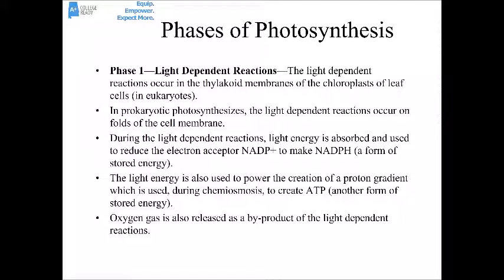Photosynthesis occurs in two main stages or phases. Phase 1 is called the light-dependent reactions. They occur in the thylakoid membranes of the chloroplast in eukaryotes — these are located in the leaves. In prokaryotes there are no chloroplasts, so the light-dependent reactions occur on the folds of the cell membrane, where we find the pigment proteins in a bacterium like cyanobacteria.